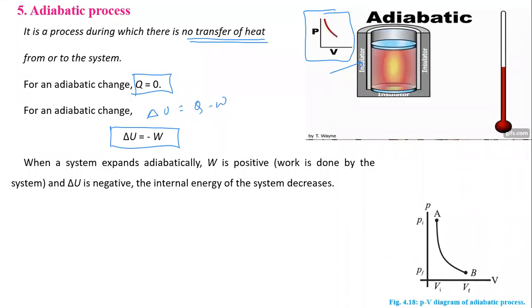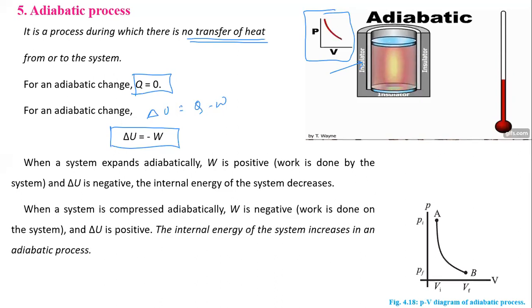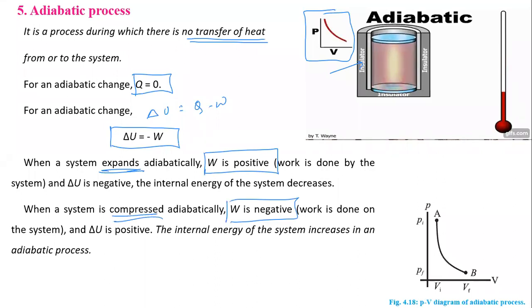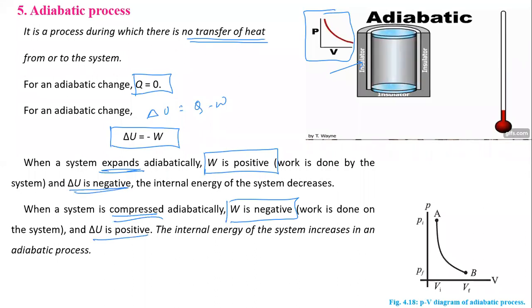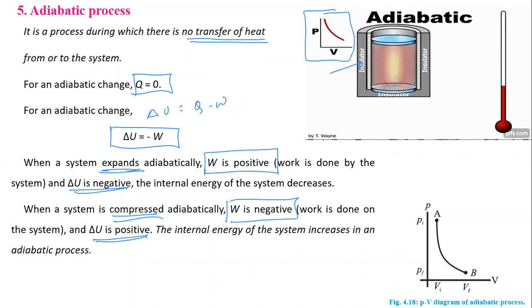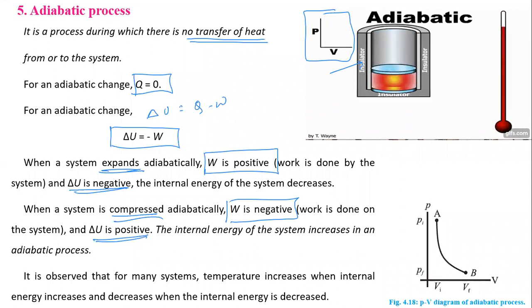When volume increases, work is positive; when volume decreases, work done is negative. When the system is compressed adiabatically, W is negative. ΔU has the opposite sign to work done: if W is positive, ΔU is negative; if W is negative, ΔU is positive and internal energy increases. For many systems, temperature increases when internal energy increases and decreases when internal energy decreases.